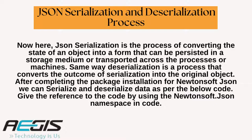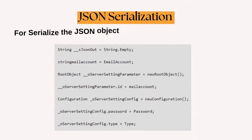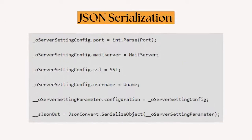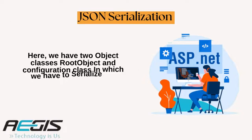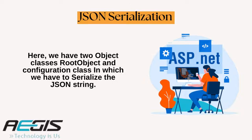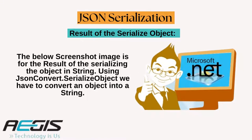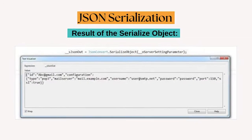Give the reference to the code by using the Newtonsoft.JSON namespace in code. For serializing the JSON object, we have to write the code as mentioned in the image. Here, we have two object classes — root object and configuration class — in which we have to serialize the JSON string. In the below screenshot image, you can see the result of serializing the object into a string. Using JSON Convert.SerializeObject, we have to convert an object into a string.